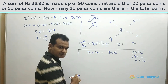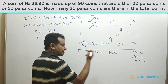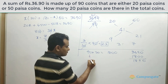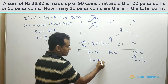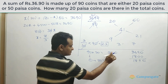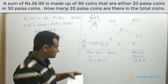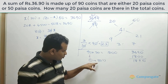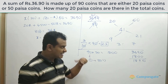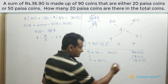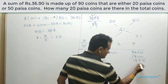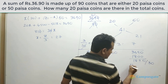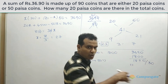If you replace one 20 paisa coin with a 50 paisa coin, the value increases by 30 paisa. So to make up the shortfall of 1890 paisa, divide 1890 by 30, which tells you how many coins need to be replaced.